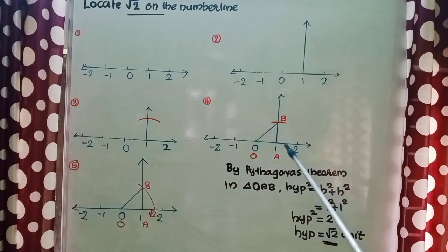Let us give name for that triangle. The number 0 we can name as O, here A and here B. And now we have got a right triangle OAB.